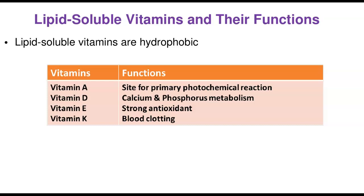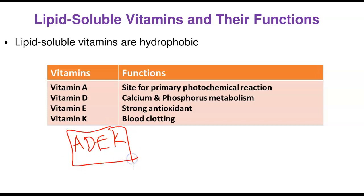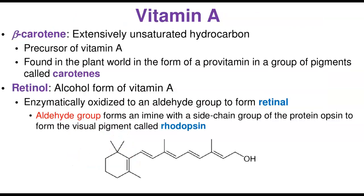There are four lipid-soluble vitamins. Vitamin A is a site for photochemical reactions and plays an important role in vision. Vitamin D is involved in calcium and phosphorus metabolism; its deficiency causes rickets in children, leading to brittle bones. Vitamin E is the strongest antioxidant, helping to ward off free radicals resulting from oxidation of saturated fatty acids in the body. Vitamin K plays an important role in the blood clotting cascade.